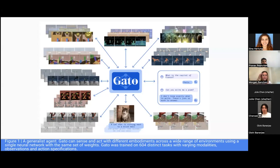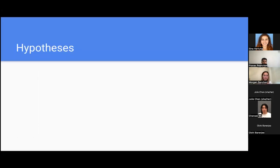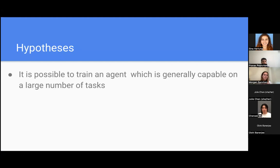This is their first figure where they show a bunch of the different tasks that Gato can do. It was trained on 604 distinct tasks in various modalities, observations, and action specifications. It can chat with someone, caption an image, move blocks using a robotic arm, and play all these games.